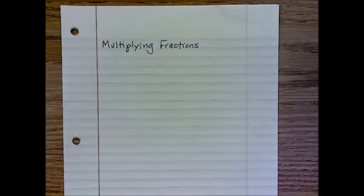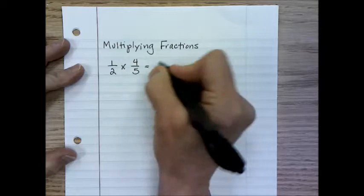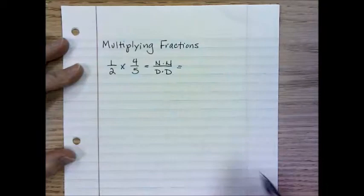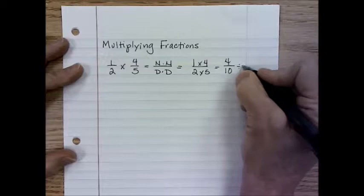All right, let's talk about multiplying fractions. If I have one-half times four-fifths, for multiplying, we just take our numerator times our numerator, denominator times our denominator. So this would be one times four over two times five, so this would be four over ten, and we need to reduce this fraction, so we'll divide by two, and that would be two-fifths.